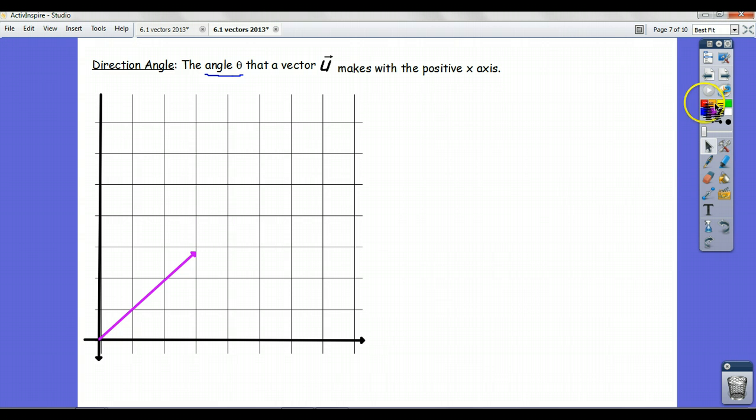The direction angle, by definition in the picture, is the angle that this vector u makes with the positive x-axis. Here's the positive x-axis. The angle it makes is right there, called theta.